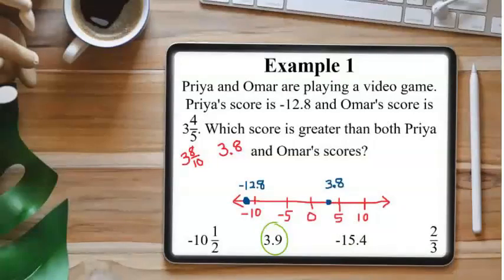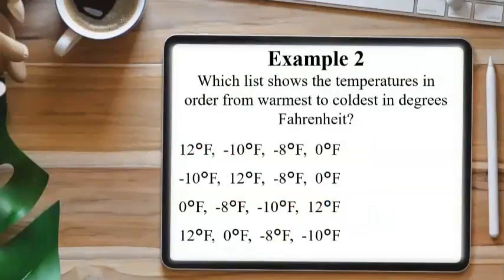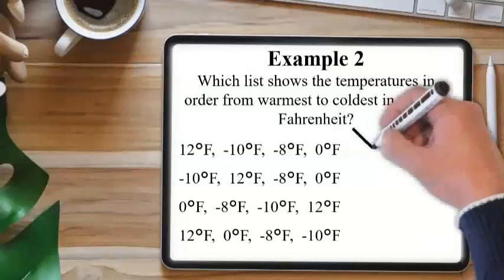Let's try another problem. Example two says, which list shows the temperatures in order from the warmest to coldest in degrees Fahrenheit? The first answer choice starts with the warmest temperature, the highest number 12, but then it lists negative 10 followed by negative 8. But negative 8 is greater than negative 10, so we can eliminate this answer choice.